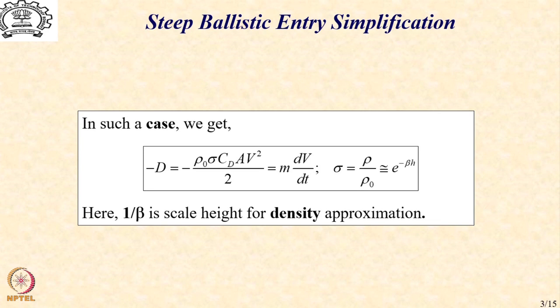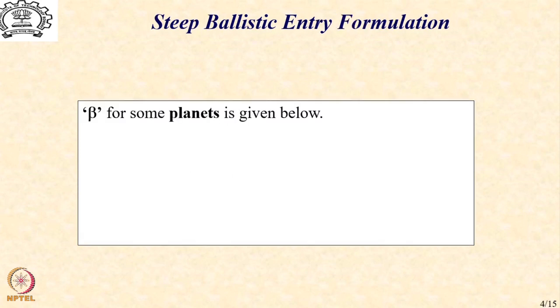It should be mentioned here that 1 by beta is called the scale height commonly employed for density approximation while capturing the effect of atmosphere on the vehicles. Given below are some values of beta for various planets which have atmosphere.